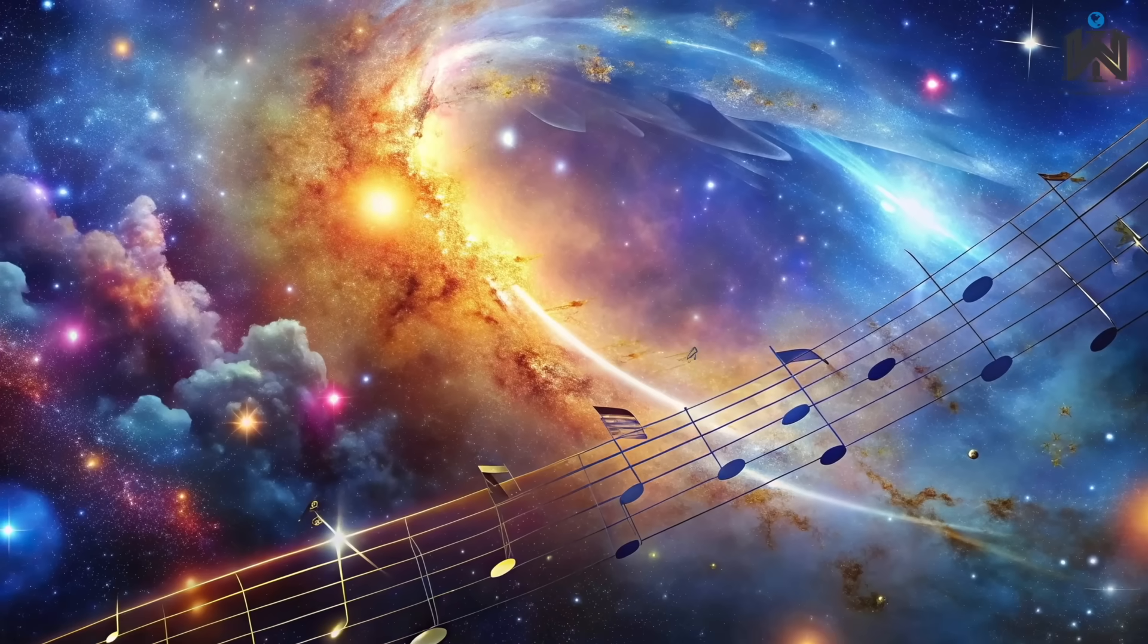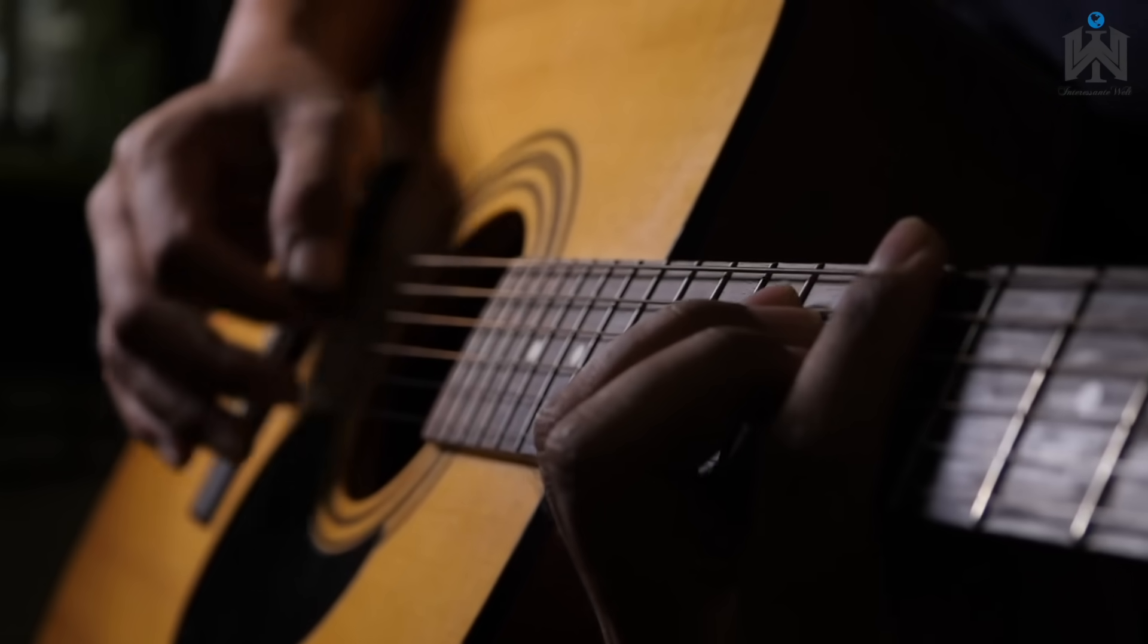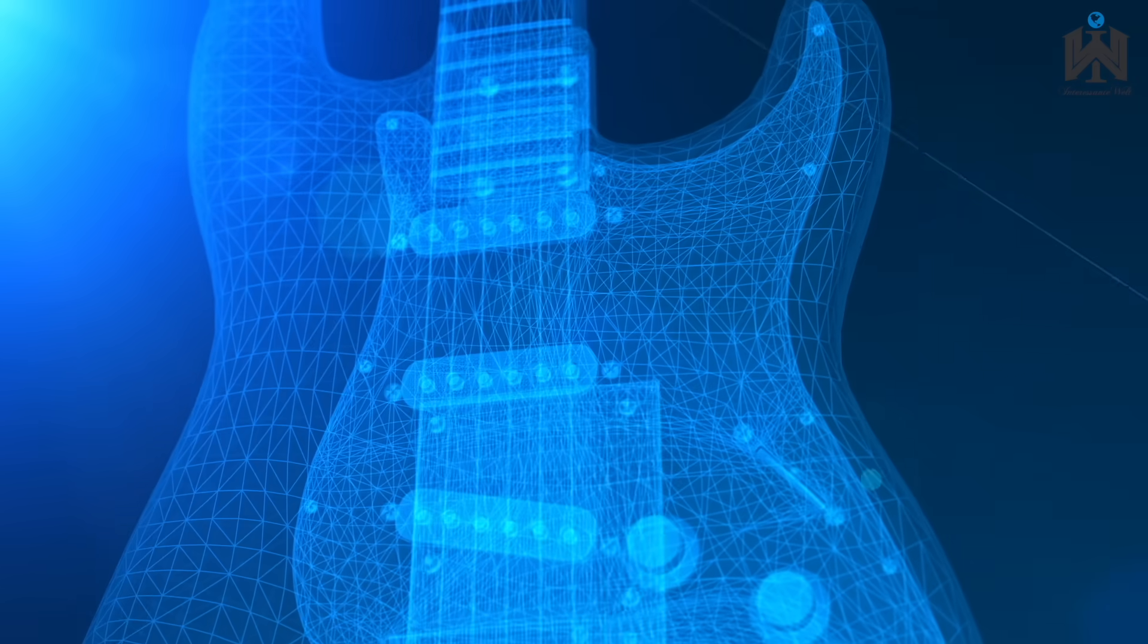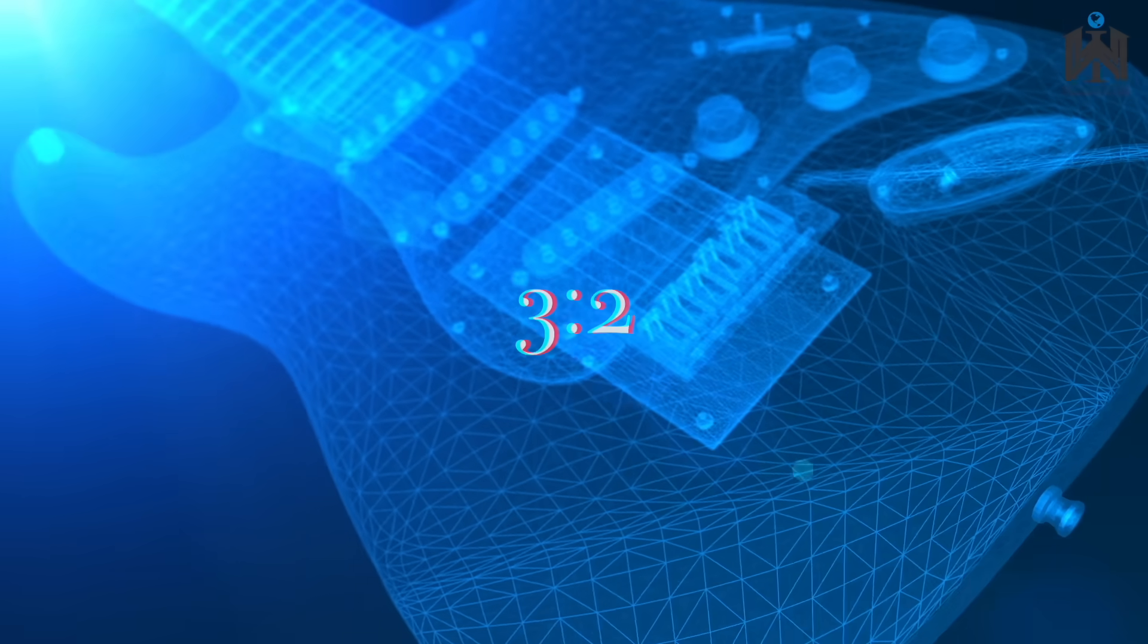Zum Beispiel, du schlägst eine ganze Saite an und es erklingt der Grundton 220 Hertz. Halbierst du die Saite, schwingt sie mit 440 Hertz, also im Verhältnis 1 zu 2. Das ist in der Musik genau eine Oktave höher und klingt harmonisch zueinander. Im Verhältnis 3 zu 2 hören wir beispielsweise eine Quinte, ein grundlegendes Intervall in der Musik.